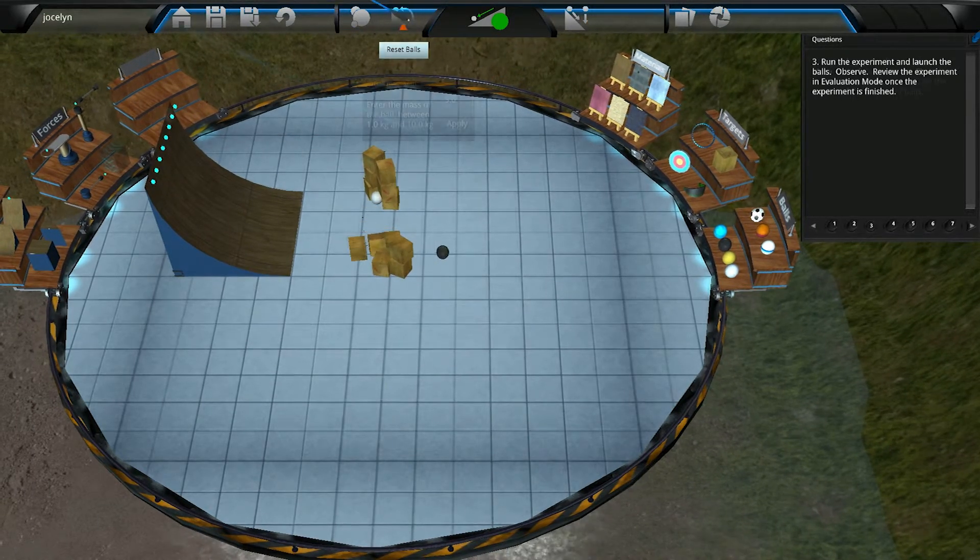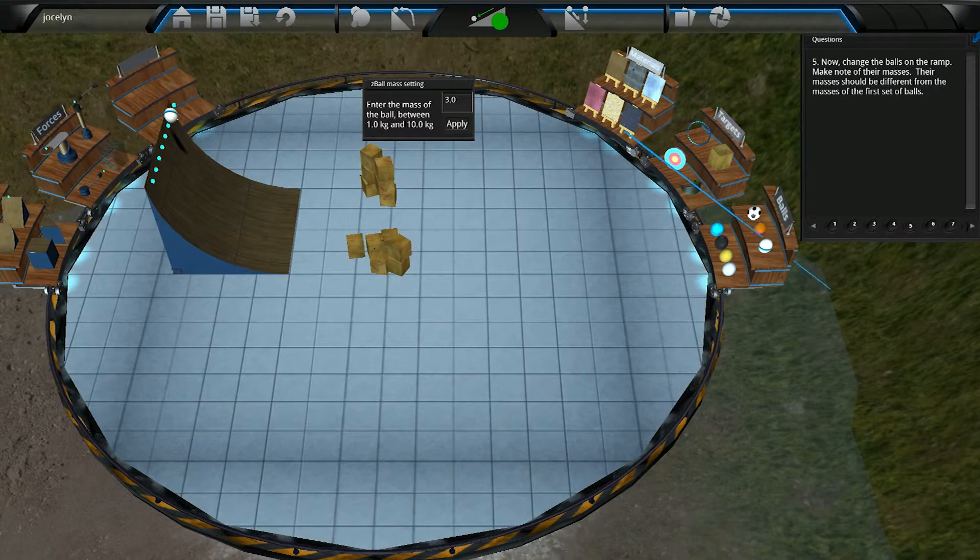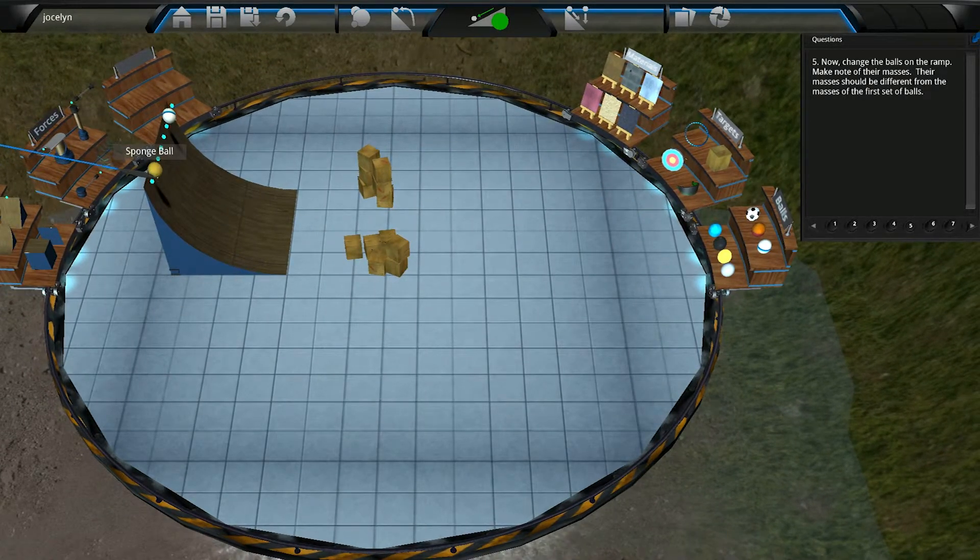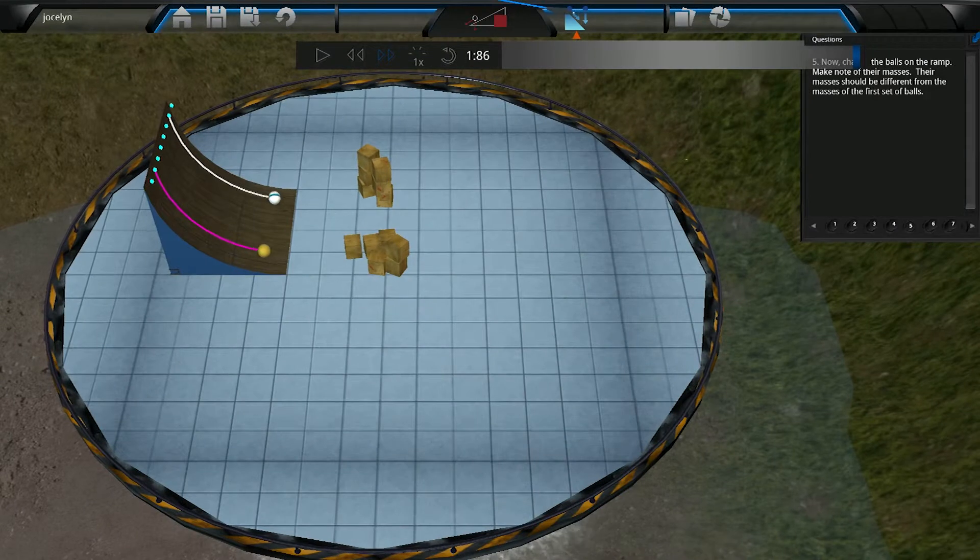Based on what they see, they will make claims about the inertia of these balls. Then the students will choose two new balls from the inventory and based on their observations in the first experiment, they will predict the inertia of the new balls and run the experiment to test their predictions.